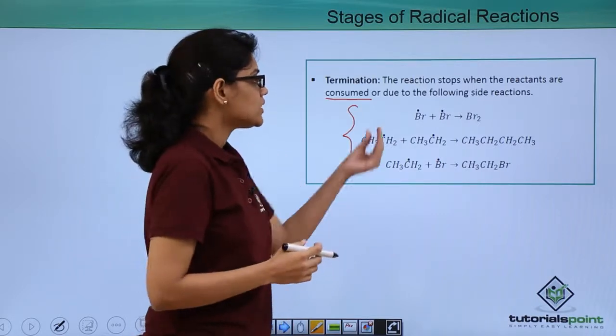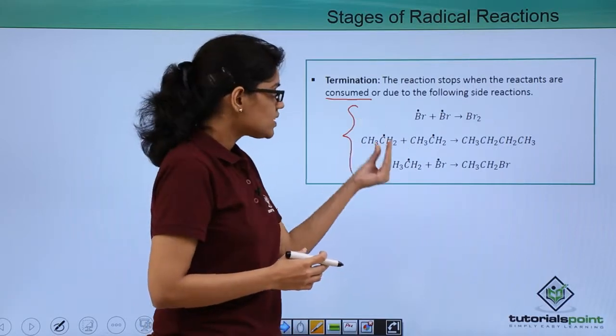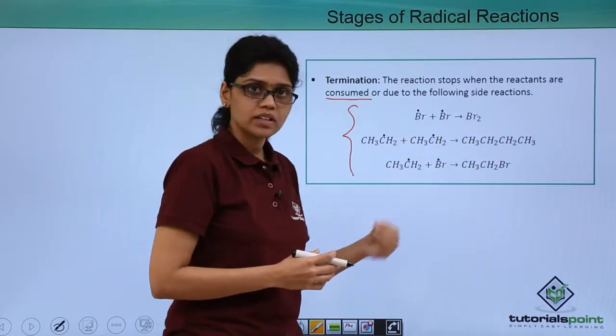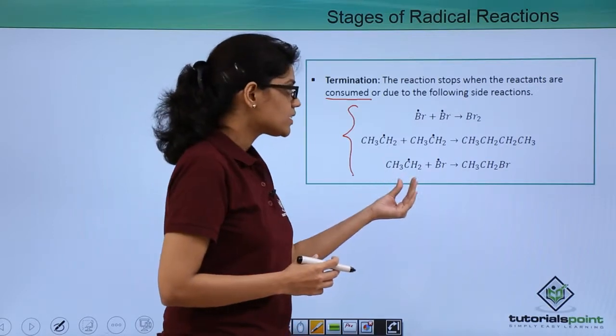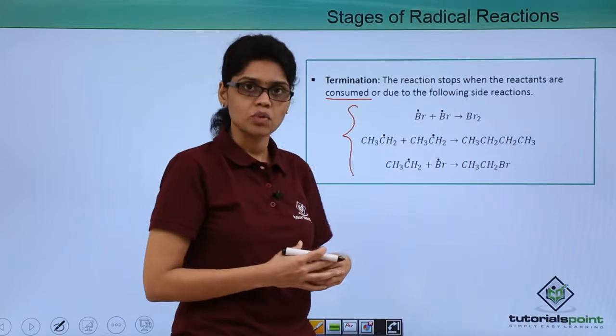We can see that Br dot combines with Br dot to form bromine molecule. Ethyl radical combines with another ethyl radical to form butane. And ethyl radical can also combine with another bromine radical to give us ethyl bromide.